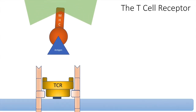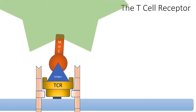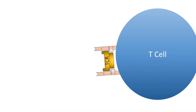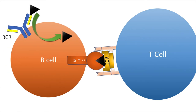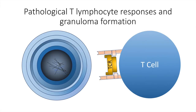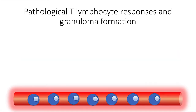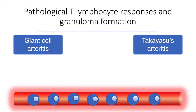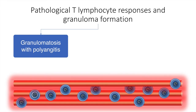This is the schematic diagram of the T-cell receptor with antigen being presented in the context of a major histocompatibility complex by the antigen presenting cell. The T-cell attaches and stimulates the B-cell to produce antibodies. A pathological T-cell response resulting in granuloma formation may also be an underlying mechanism for vasculitis. Conditions include giant cell arteritis, Takayasu's arteritis, and granulomatosis with polyangiitis.